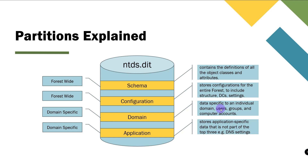The application partition stores everything not stored in the top three partitions. A key example is DNS — DNS settings inside the entire repository. Once built out, the application partition will store only the information needed for that domain specifically, separate from the schema, configuration, and domain partitions.